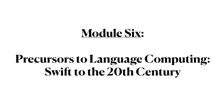In Module 6, we will consider various precursors that foreshadowed the later development of computational language technologies. This examination will begin with fictional devices described by Jonathan Swift in Gulliver's Travels, and continue to the 20th century.